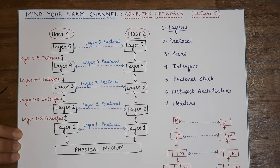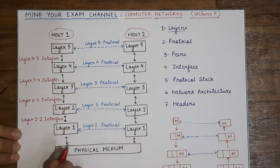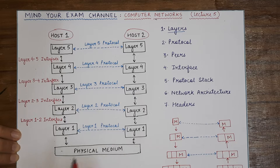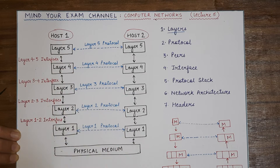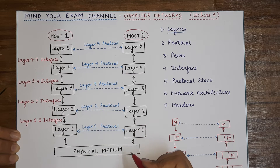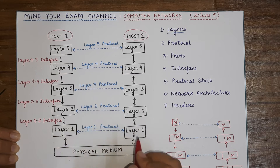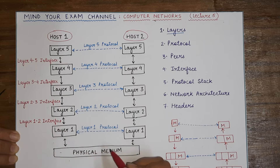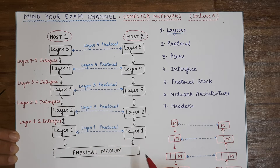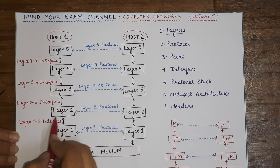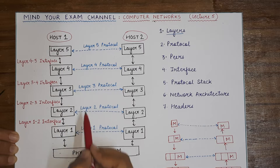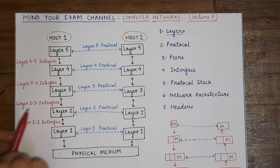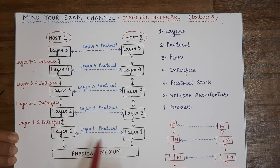The first important point is layers. What are layers and what is the role of layers in a computer network? As you can see in the diagram, any host or machine connected to the network makes use of multiple layers so as to communicate with any other host present in the network. Each host consists of multiple layers that help it in communication, and these layers define certain kinds of functionality.